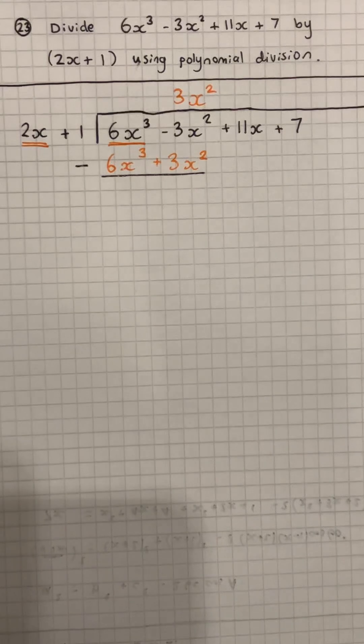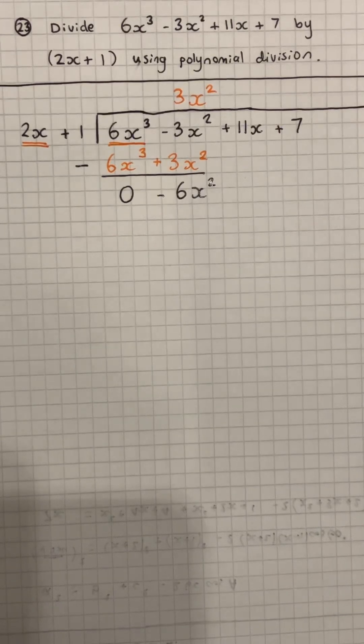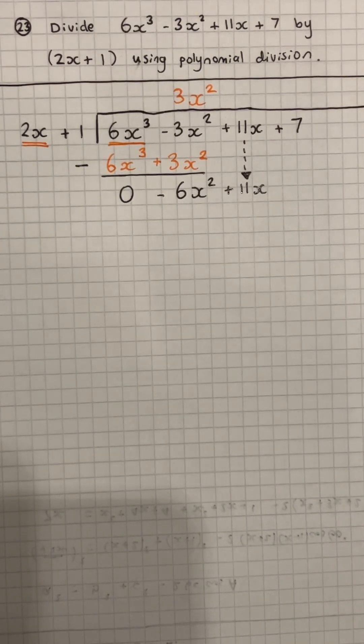Next, we are going to subtract these two, top takeaway bottom. If we've done it right, we should get 0 for the first term, and in this case, we get minus 6x squared. Then what we're going to do is we're going to bring this 11x down and repeat the whole process.